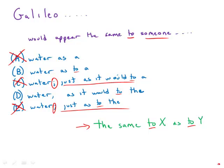Then we're left with D. So B is just very straightforward: person on the water as to a person standing on land.